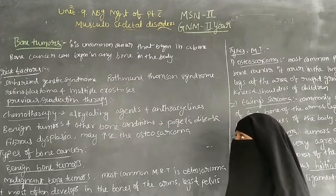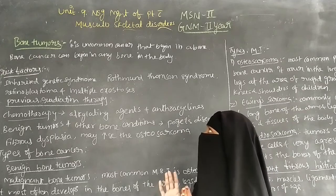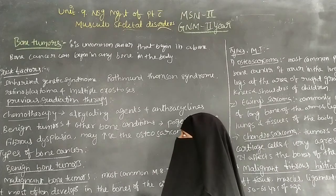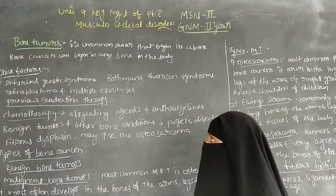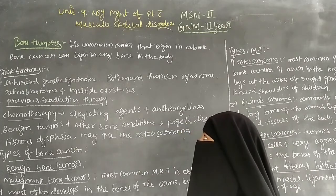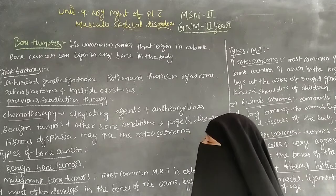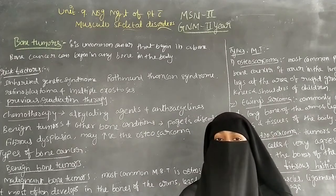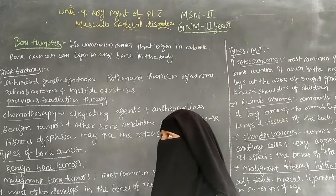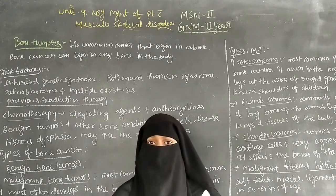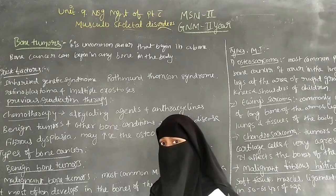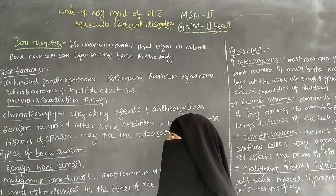Bone tumors is nothing but cancer of the bones. It is a very rare and uncommon condition. The cancer begins in the bone and can occur in any bone in the body, but it mostly affects the long bones — that is, the arm bones and the leg bones.